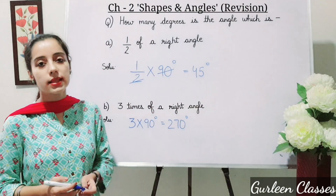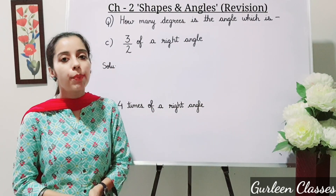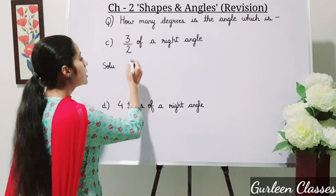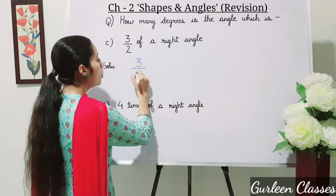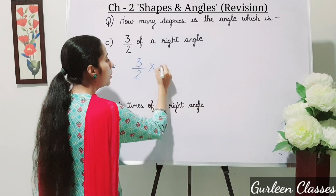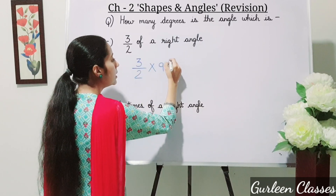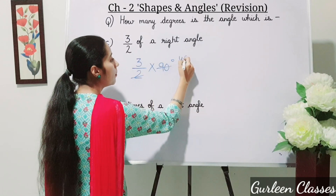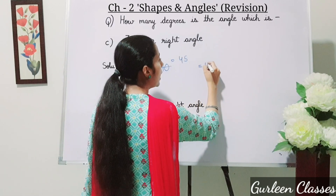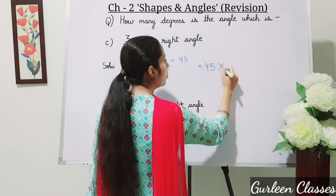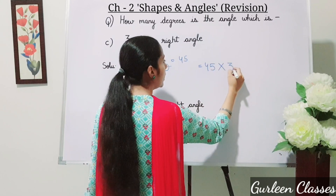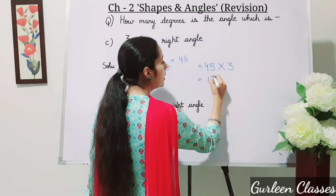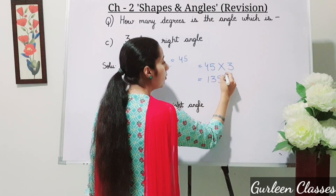Part C: 3 upon 2 of a right angle. So we calculate 3/2 into 90 degrees. Divide 90 degrees by 2 to get 45, then multiply 45 by 3. 5 times 3 is 15, carry 1; 4 times 3 is 12 plus 1 is 13. The answer is 135 degrees.